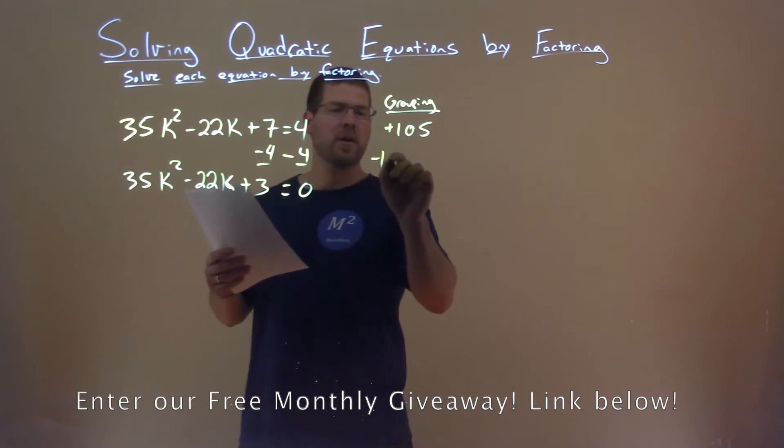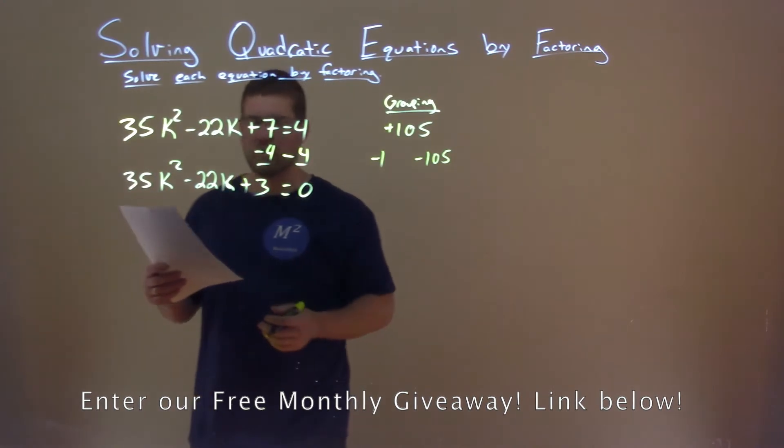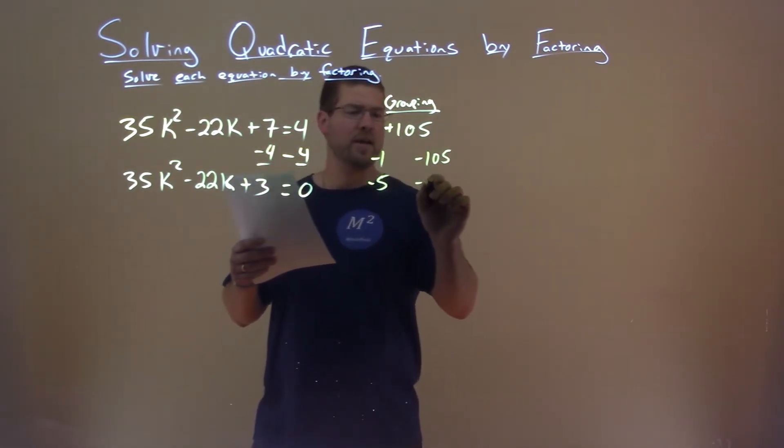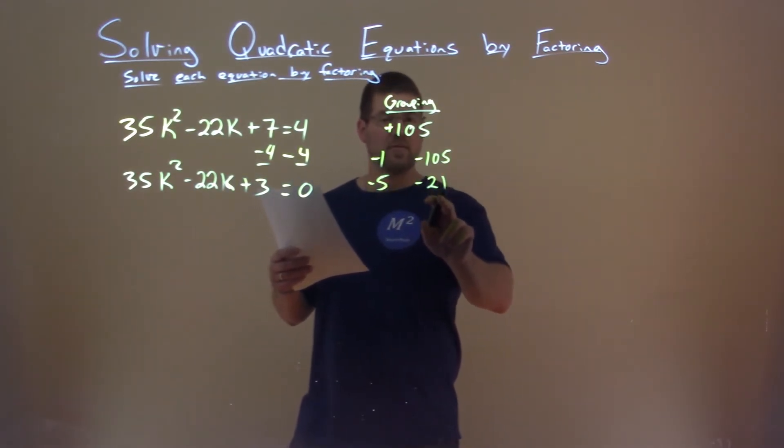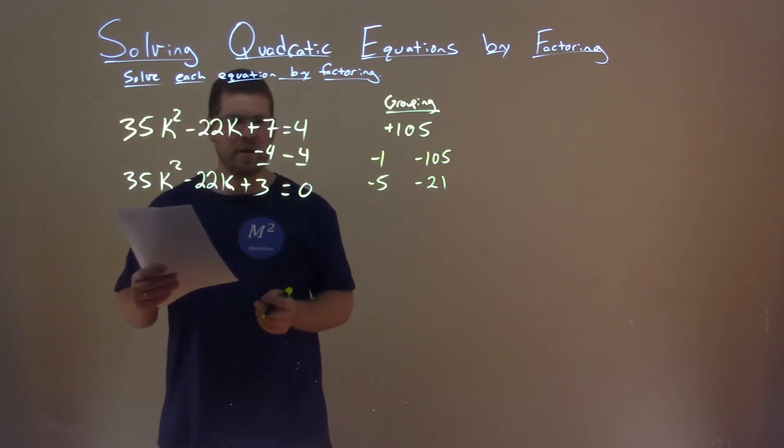So negative 1 times negative 105 clearly meets positive 105, but not even close to adding. Negative 5, I just kind of did this, negative 21. Negative 5 times negative 21 is 105, but close, doesn't equal negative 22.